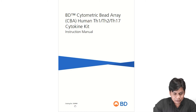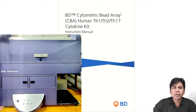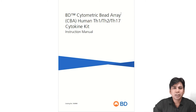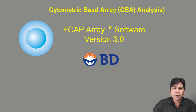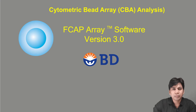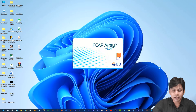The kit catalog number is 560484. We ran our samples in the BD LSR Fortessa machine and exported our data in FCS version 3. Today I am going to show you how you can analyze your CBA data using the FCAP Array software. You can see on my laptop screen.